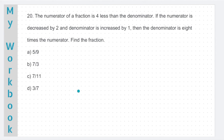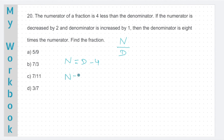Question number 20. The numerator of a fraction is 4 less than the denominator. Let's assume N as the numerator and D as the denominator. So the fraction will be N by D. First line states: numerator of a fraction is 4 less than the denominator. So N is D minus 4, or N minus D is minus 4. We have got our first equation.